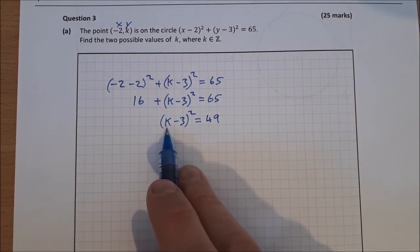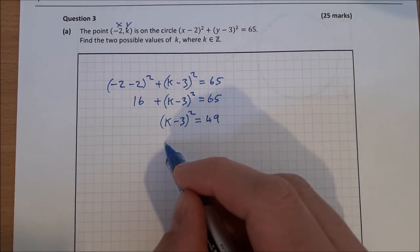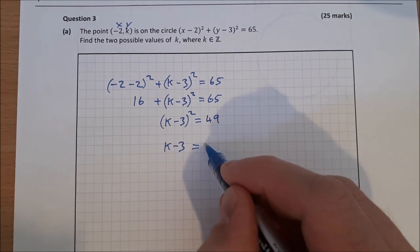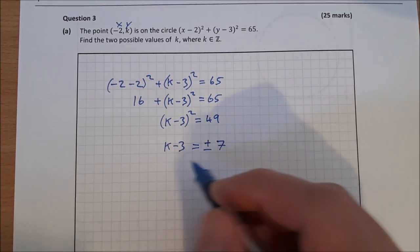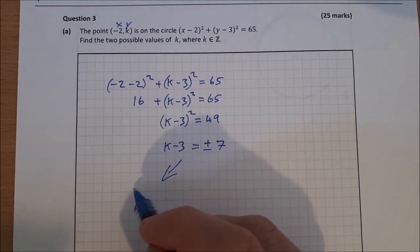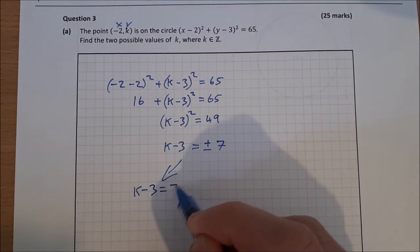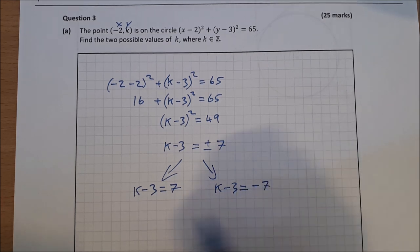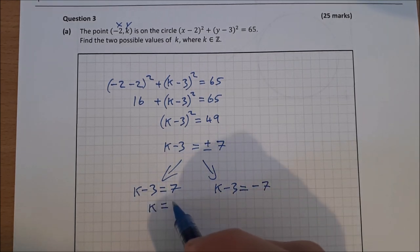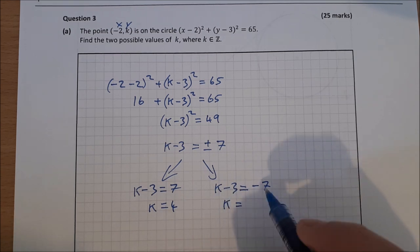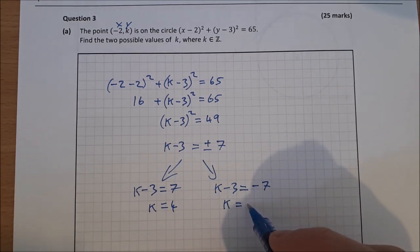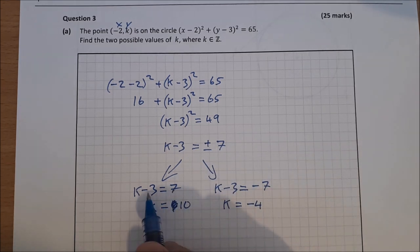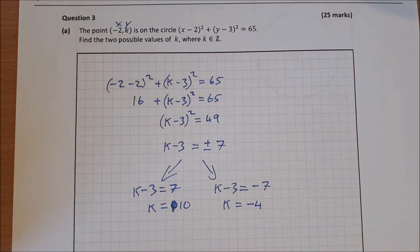Taking the square root of both sides: k − 3 = ±7. That gives two equations: k − 3 = 7 and k − 3 = −7. So k = 10 and k = −4.